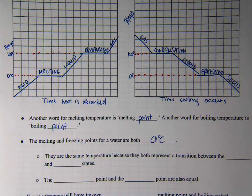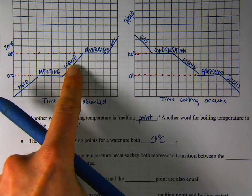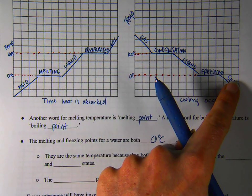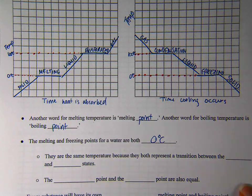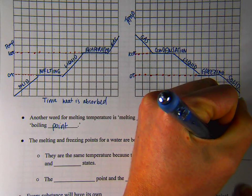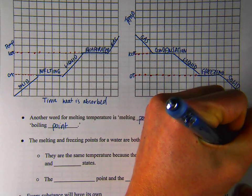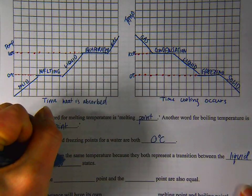Why are they the same? They're the same because they both represent a transition between the same two phases. Melting is solid to liquid, freezing is liquid to solid. But that's the same two phases, right? It just depends on which direction we're going. So they represent a transition between liquid and solid states.